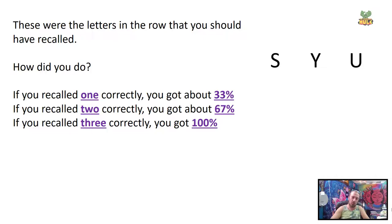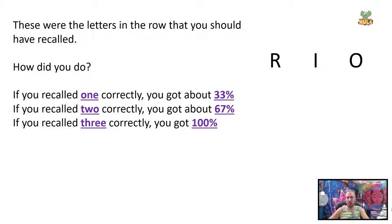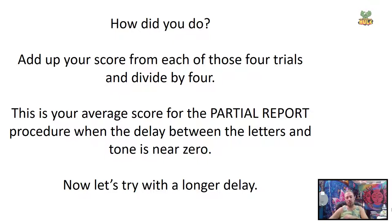Trial seven. Here we go. How'd you do? Last one. How'd you do that time? So add up your score from each of those four trials, divide by four. This is your average score for the partial report procedure when the delay between the letters and the tone is nearly zero. Pretty much right after the letters go away. Now let's try it with a longer delay.